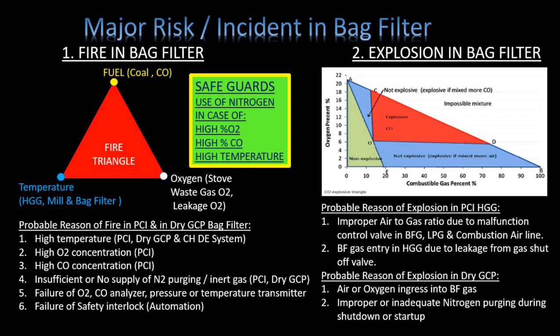Probable causes of fire include: high temperature, applicable in PCI, dry GCP, and cast house dedusting; high oxygen concentration in PCI; high carbon monoxide gas concentration in PCI; insufficient or no supply of nitrogen purging or inert gas in PCI and dry GCP; failure of oxygen or carbon monoxide analyzers; failure of pressure or temperature transmitters in PCI; and failure of safety interlock automation in PCI and dry GCP.